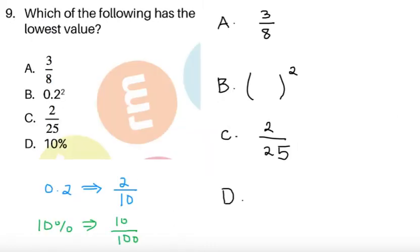To continue, item 9: which of the following has the lowest value? We have 4 values which are all written a little bit different. Some are in fractions, in decimals, in percentages. So we want to convert everything into a similar form.